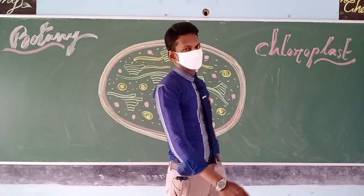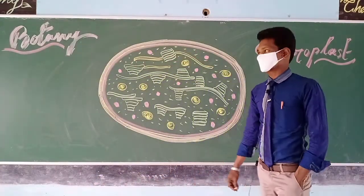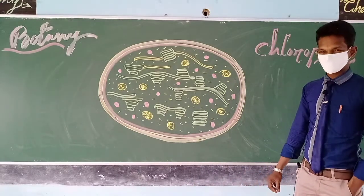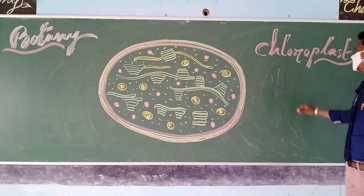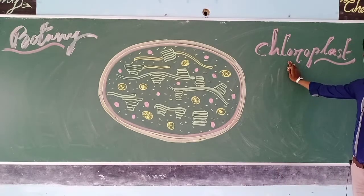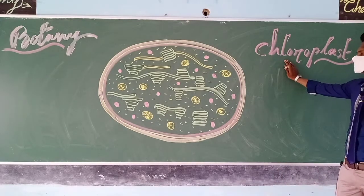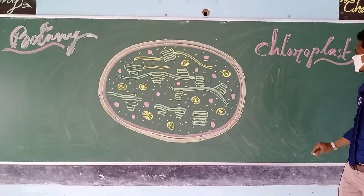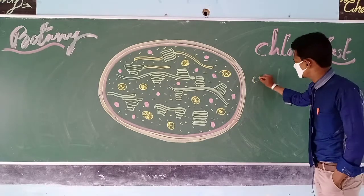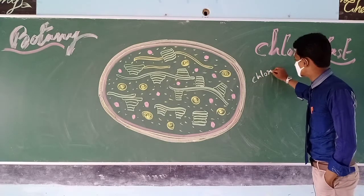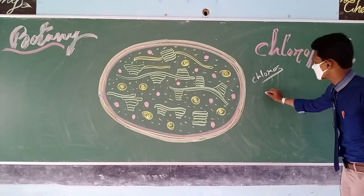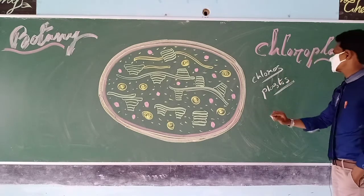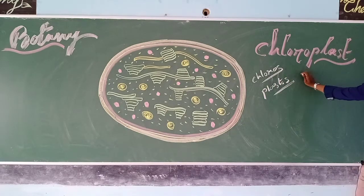Hello, dear multicellular organisms. Welcome back to our botany class. Today in our class, we are going to discuss about chloroplast. Here, 'chloros' means green color, and 'plastos' means molded — hence the name chloroplast.